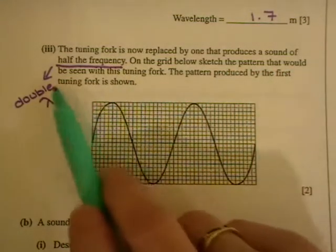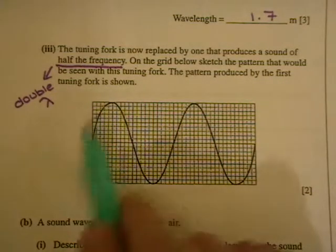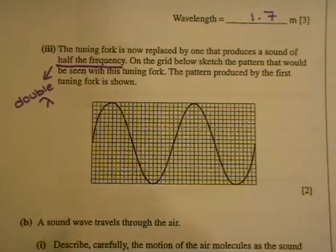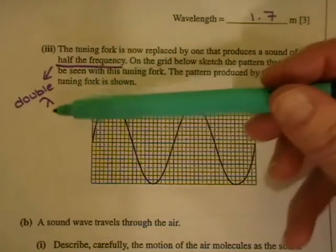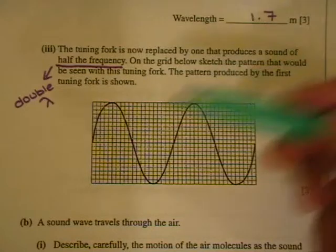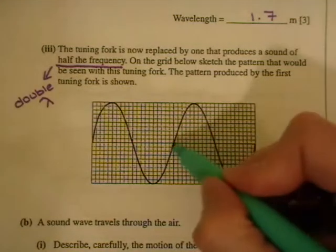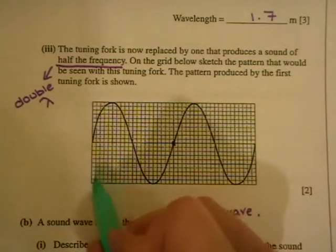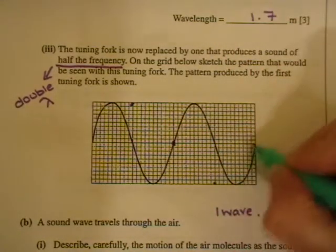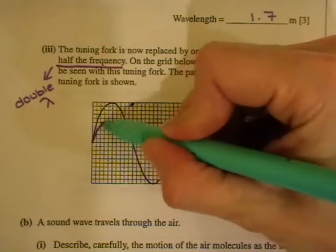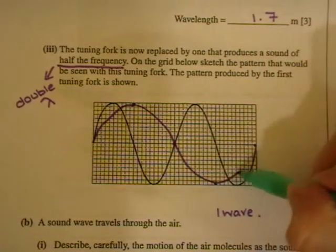On the grid below, sketch the pattern that will be seen with this tuning fork. The pattern produced by the first tuning fork is shown below. So you can see you've got two complete waves in this graph area. But you're being asked to produce a sound of half the frequency or double the wavelength. So you're only going to have one wave in that same area there. So there's your halfway point. And so you're going to have, whatever way you want to start it off, I'm just going to put in my points here that I know I'll be passing through. So I'm going to have a crest here and a trough here. One complete wave.